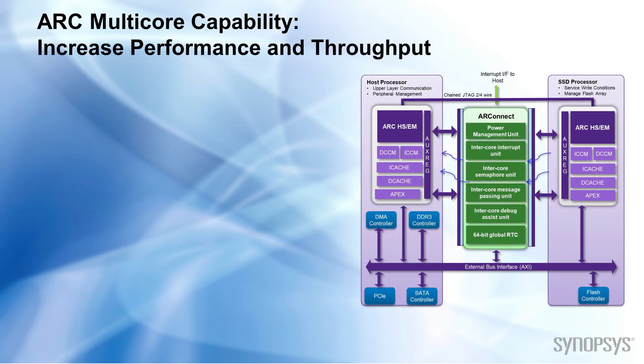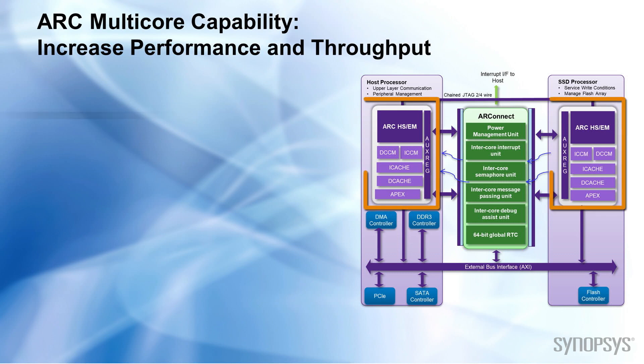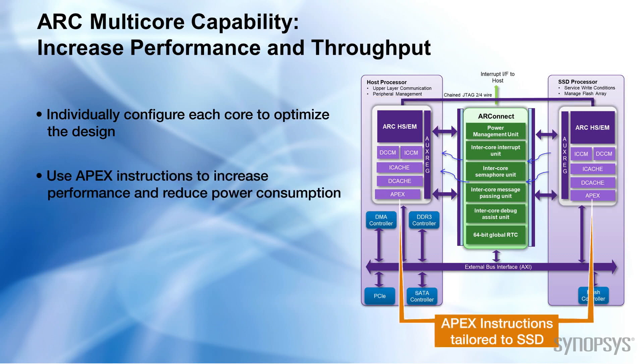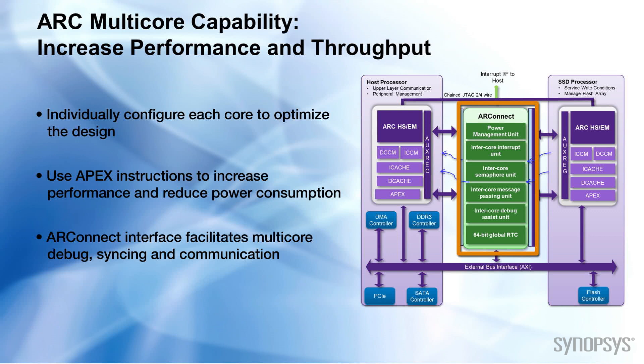ARC processors offer easy support for multi-core implementation to increase performance and throughput. The cores in a multi-core implementation can be individually configured to optimize the design. Apex instructions can be used with multi-core designs to further increase performance or reduce power consumption. The cores are connected with the ARC Connect interface that facilitates multi-core debug, syncing, and communication.